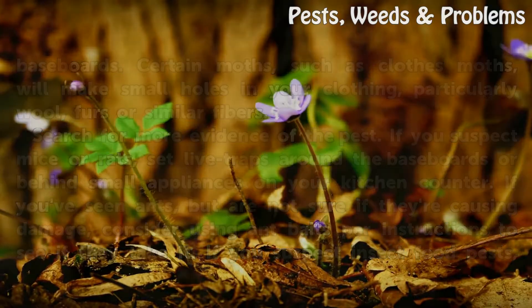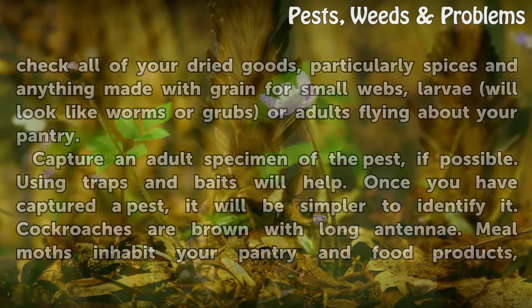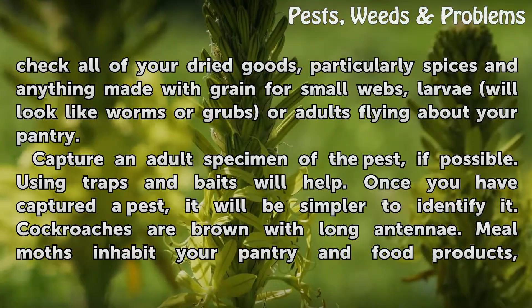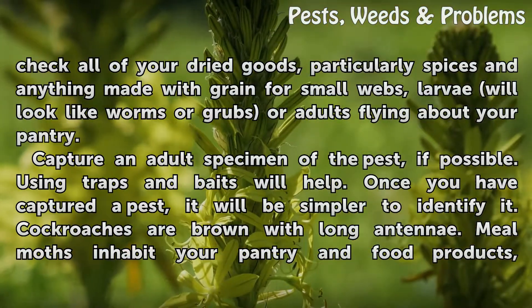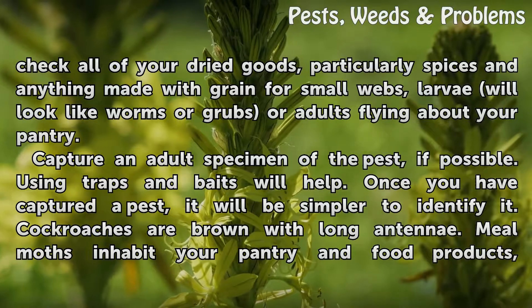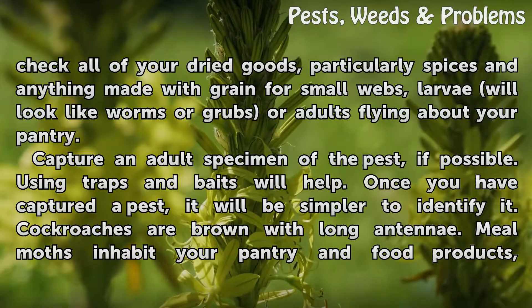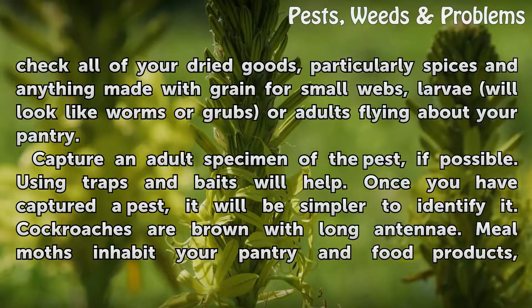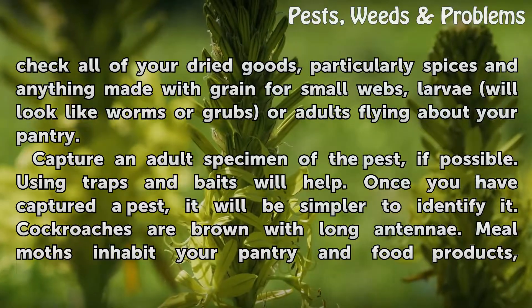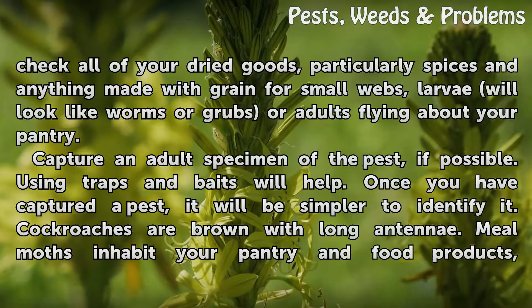If you suspect insect food pests, check all of your dried goods, particularly spices and anything made with grain, for small webs. Larvae will look like worms or grubs, or you may see adults flying about your pantry.